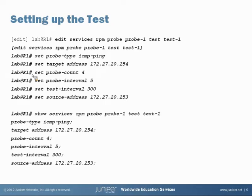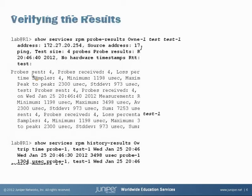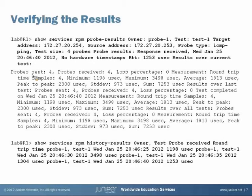The output at the bottom shows the configured syntax. Let's go ahead and verify the results — this is not easy to look at on the slide. We'll go through the two commands and then analyze this when we look at the real test output. Command number one, running on the device we just configured, shows 'services RPM probe results'. The next one shows 'RPM history results'. We'll take a look at these two commands when we perform the actual test.